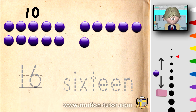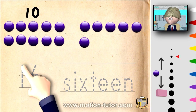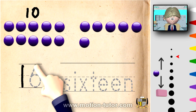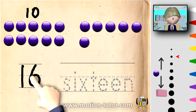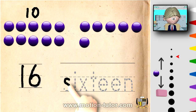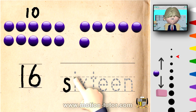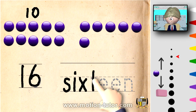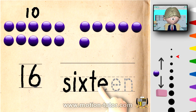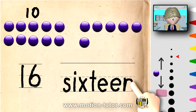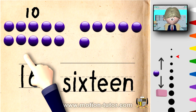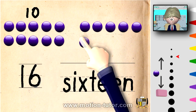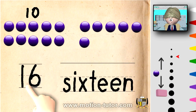This is how sixteen looks, and this is how it's spelled. So now let us write the number sixteen. It's a one and a six, and it's spelled S-I-X-T-E-E-N. Sixteen.